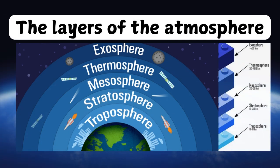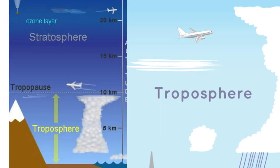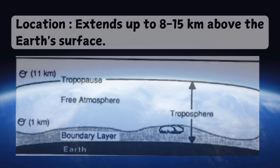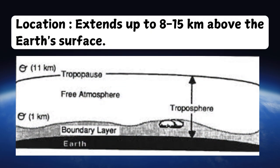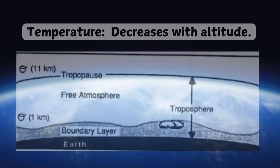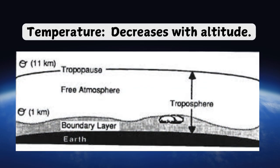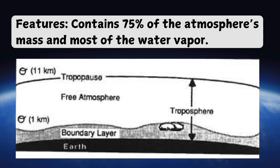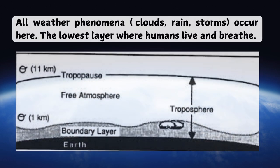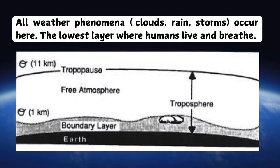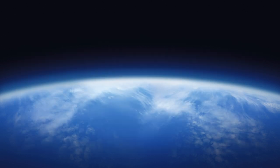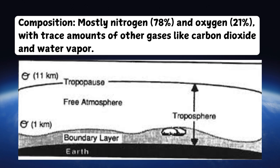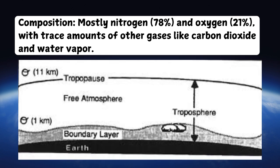The layers of the atmosphere. Number one: Troposphere. Location: extends up to 8 to 15 kilometers above the Earth's surface. Temperature decreases with altitude. Features: contains 75% of the atmosphere's mass and most of the water vapor; all weather phenomena — clouds, rain, storms — occur here. It is the lowest layer where humans live and breathe. Composition: mostly nitrogen (78%) and oxygen (21%) with trace amounts of other gases like carbon dioxide and water vapor.